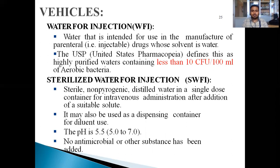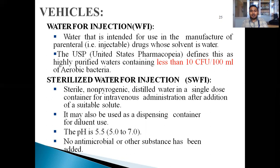Now let's discuss the vehicles. The first vehicle is water for injection, which is water intended for use in the manufacture of parenteral products — that is, drugs whose solvent is water. The USP defines this as highly purified water containing less than 10 CFU per 100 ml of aerobic activity. This is used in the preparation of small-volume and large-volume parenterals.